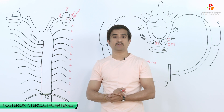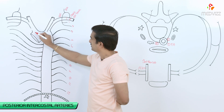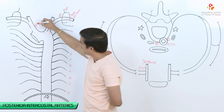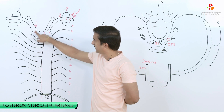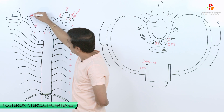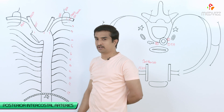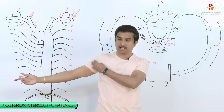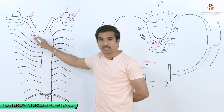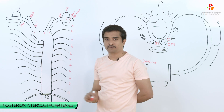Now let us discuss the overall anatomy of the arch of aorta and the subclavian artery. The arch of aorta gives off three branches. The first branch is called the brachiocephalic trunk, which in turn gives off two branches: the right common carotid artery and the right subclavian artery. The right subclavian artery arises from the brachiocephalic trunk, not directly from the arch of aorta. Similarly, the right common carotid artery arises from the brachiocephalic trunk.